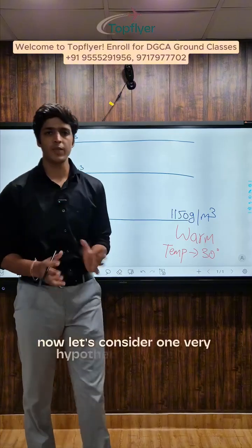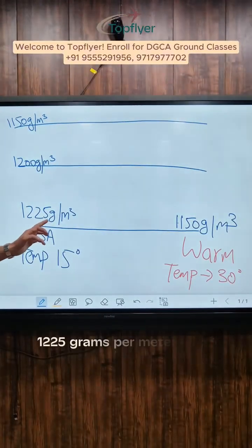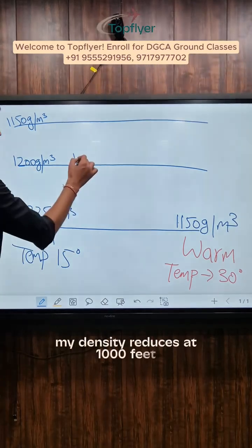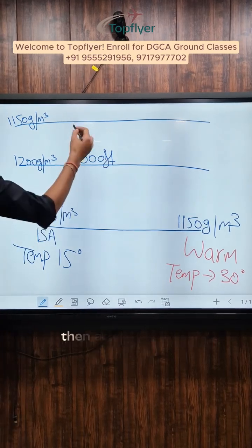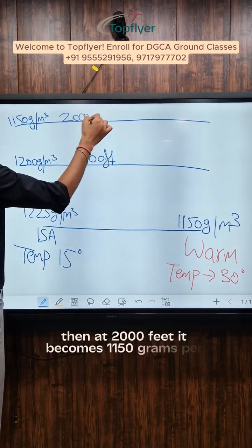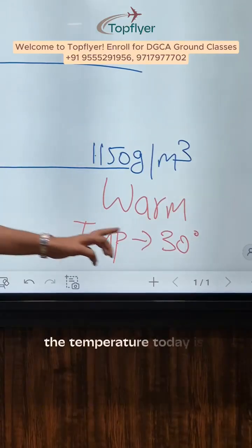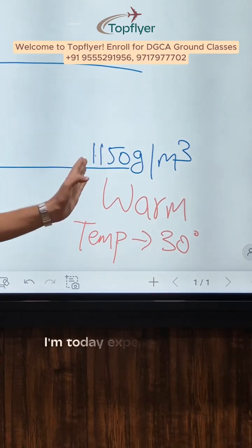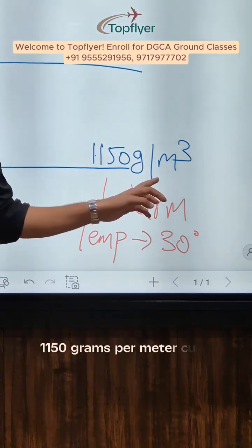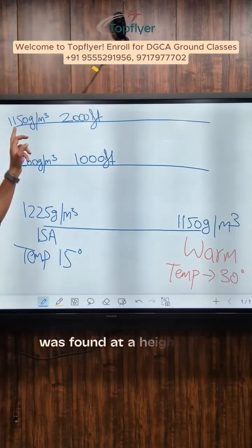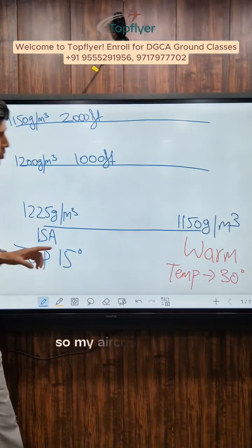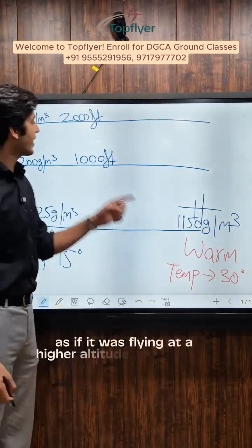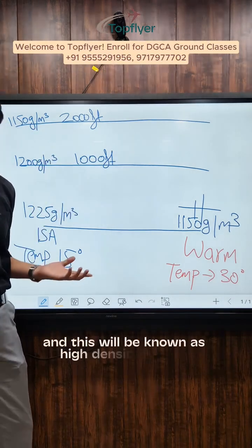Let's consider one hypothetical situation. At mean sea level, density is 1250 grams per meter cube. As height increases, density reduces — at 1000 feet it becomes 1200, and at 2000 feet it becomes 1150 grams per meter cube. Suppose the temperature today is higher than standard at 30 degrees, so density will be less. The density of 1150 grams per meter cube experienced at ground level corresponds to what ISA places at 2000 feet. So the aircraft at ground level will be performing as if it was flying at a higher altitude of 2000 feet — this is known as high density altitude.